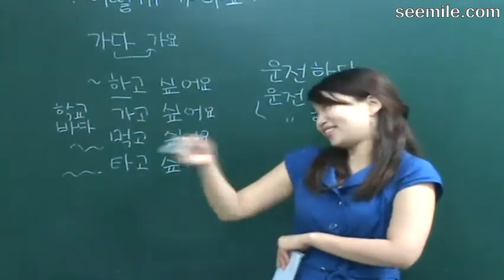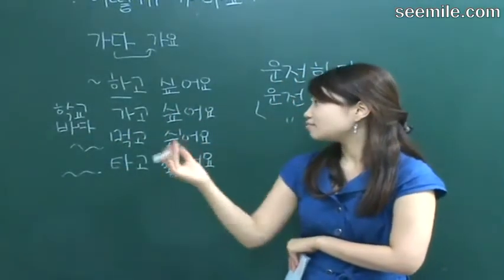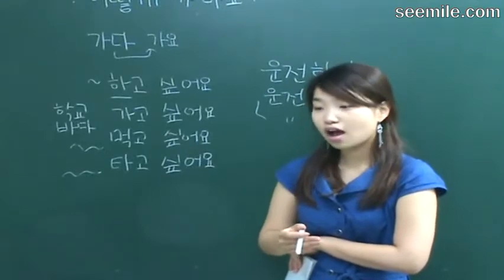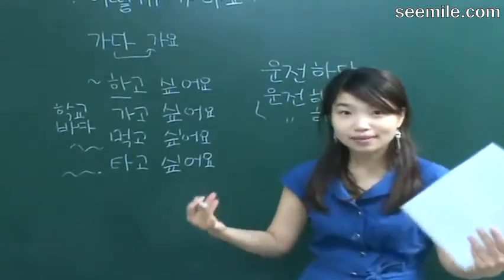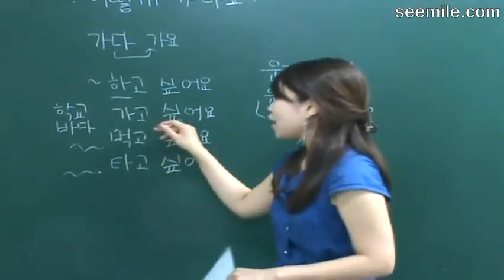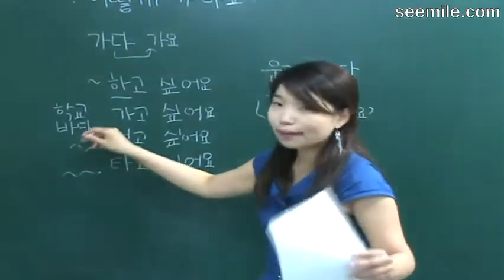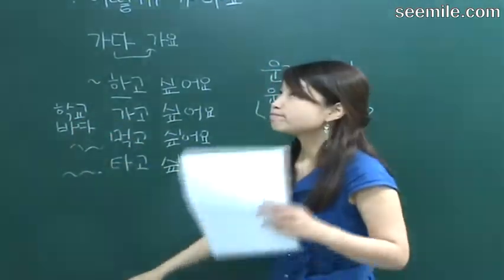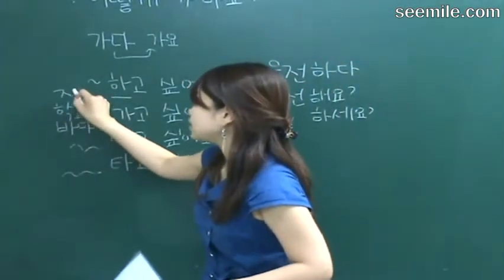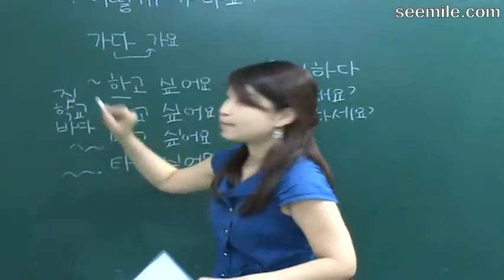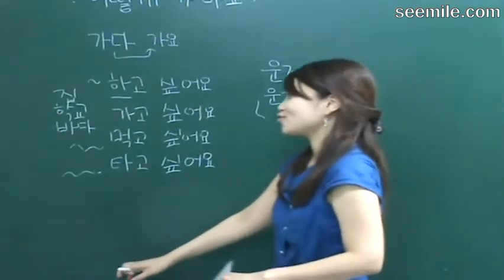Bar — 술집에 가고 싶어요. So I wanna go somewhere — you can put any place here. Places: 학교, 바다 (beach). Or 집에 가고 싶어요 — I want to go back home. 집 means home. 집에 가고 싶어요. 집이 최고예요 — it's the best. My house is the best place to take rest.